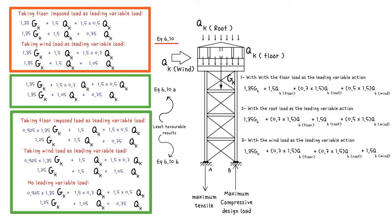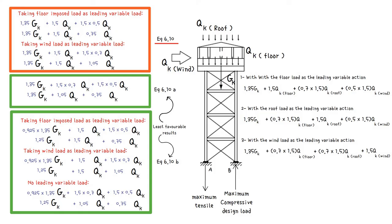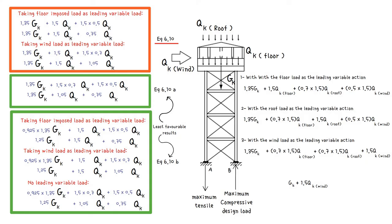To obtain the maximum tensile design load in the support leg at A, we must minimize the effect of permanent and variable actions by using the following combination: 1.0 × dead load + 1.5 × wind load. In other words, the tower is much more likely to blow over when the variable floor and roof loads are zero. For such overall stability checks, the value of γG is reduced further to 0.9.